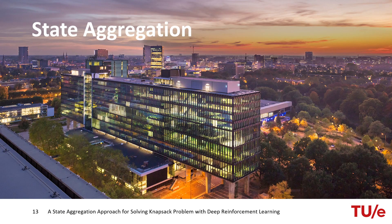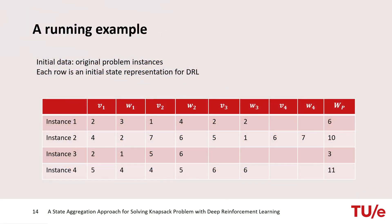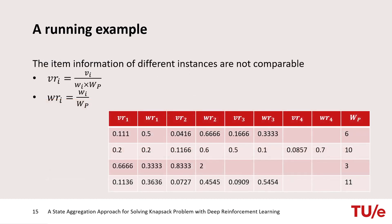The second part is state aggregation algorithm. I will explain the state aggregation using a running example. This table shows four problem instances with different number of items. In fact, each row corresponds to a problem instance. This original item information could be used as states. However, we aim to reduce the number of unique values in each column to reduce the state space. First, in order to be able to compare the information of different instances, the values and the weights are normalized using the idea of greedy algorithm for fractional knapsack problems. Then, original values and weights are replaced by the normalized ones.